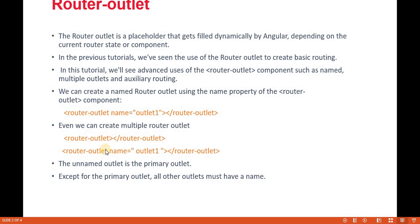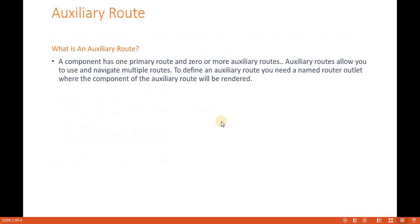We use the name keyword followed by the outlet name, and we can have multiple named outlets. A component has one primary route and zero or more auxiliary routes. Auxiliary routes allow us to navigate multiple routes simultaneously. To define an auxiliary route, we need a named router outlet where the component of the auxiliary route will be rendered.